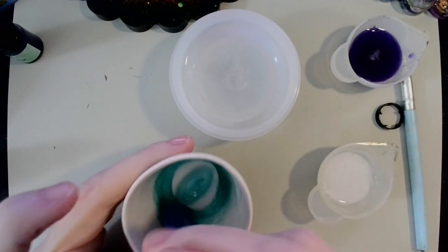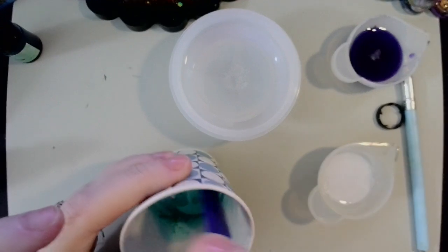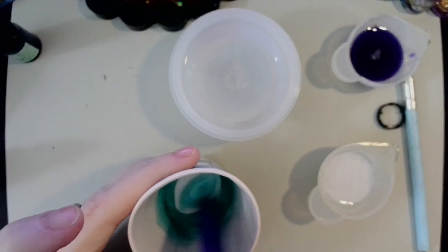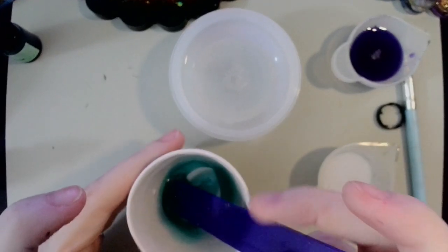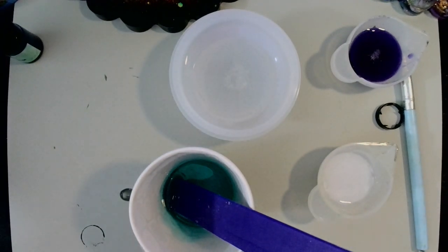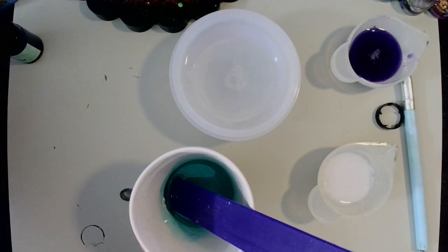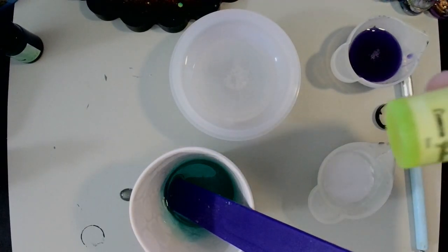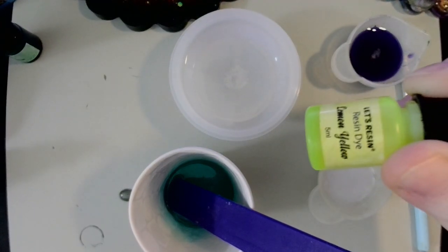It doesn't look green to me when it hits the resin, so I'm going to fix it. I'm going to make it more green and I'm going to use some lemon yellow. Here it is, a little lemon yellow.